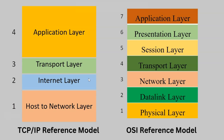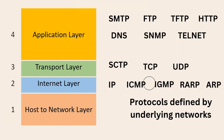In the TCP/IP reference model, there is an internet layer, while the OSI reference model has a network layer. In the TCP/IP reference model, there is a host-to-network layer, and in the OSI reference model, there is a data link layer and a physical layer. The layers in the TCP/IP reference model deal with a number of protocols.